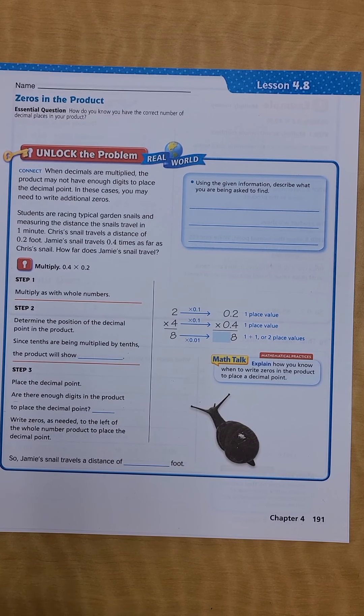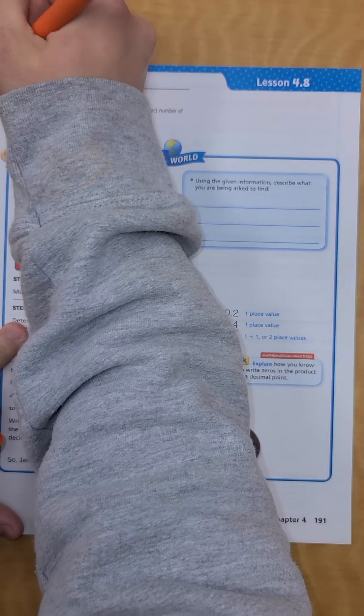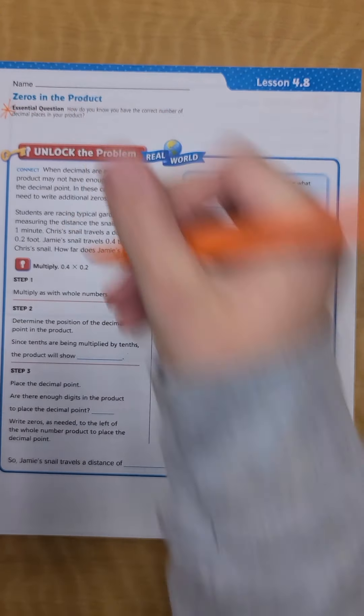Hey guys, here is lesson 4.8 zeros in the product. Our essential question for today is how do you know you have the correct number of decimal places in your product? Go ahead and put your star next to your essential question.